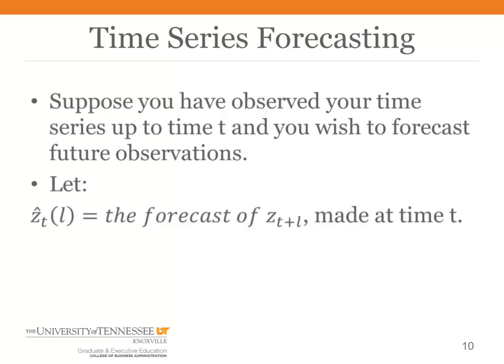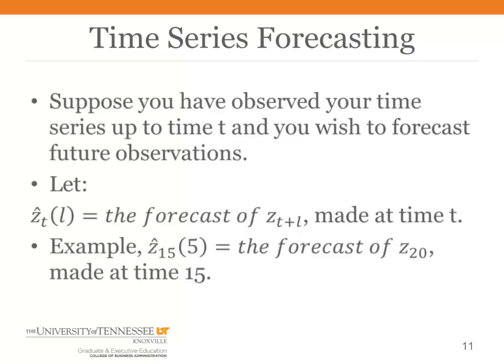Now the terminology. On the left, the Z has a hat over it. That means that rather than denoting an observation of a value, it denotes a forecast of a future value. The T subscript tells us when we are making the forecast. The L in the parenthesis tells us how far into the future we are forecasting, so T plus L is the week we are forecasting. For example, Z sub 15 parenthesis 5 says we are forecasting in week 15, five weeks into the future — so we are making a forecast of what will be happening in week 20, and we are making that forecast in week 15.